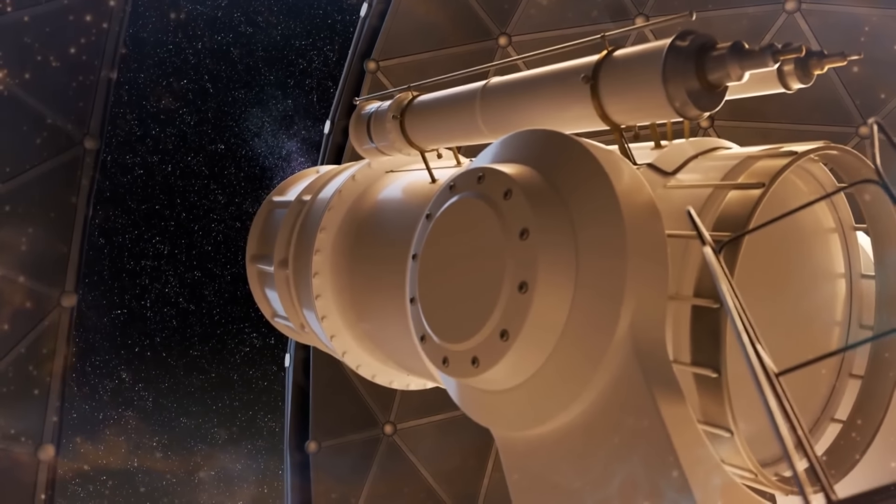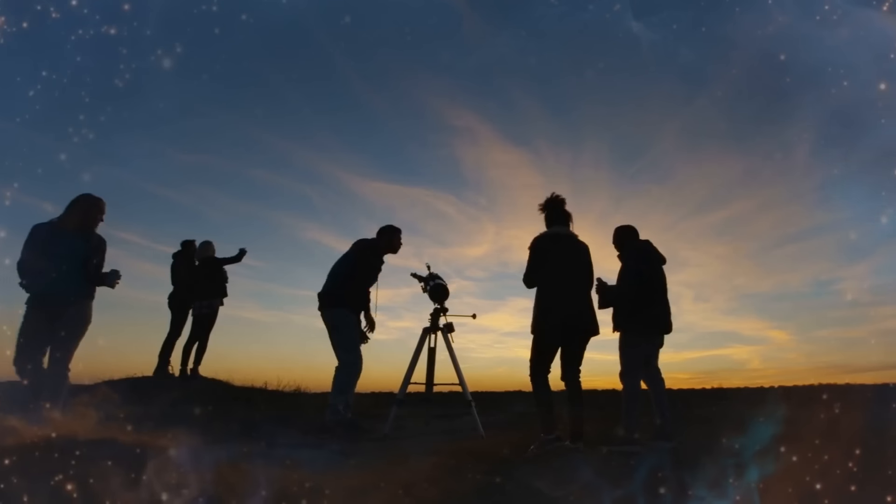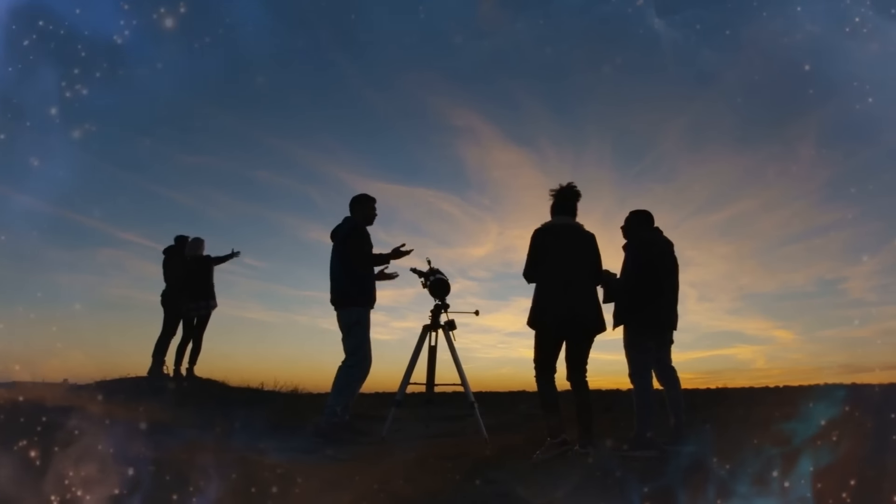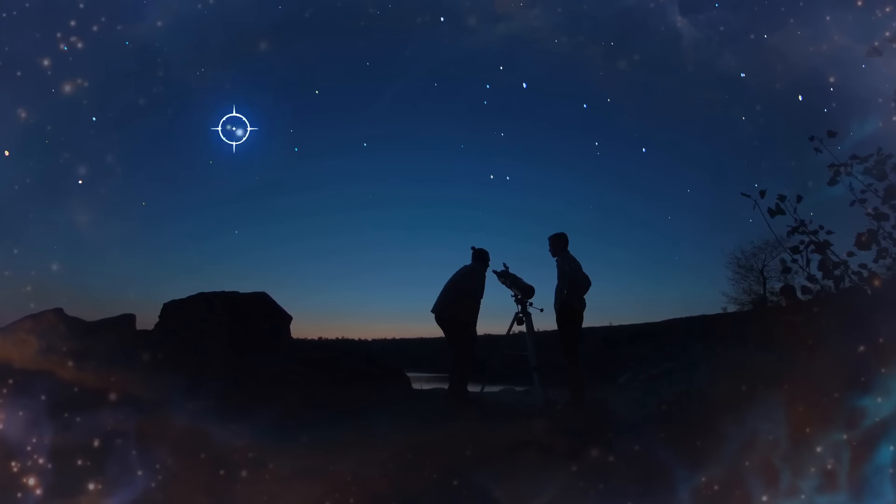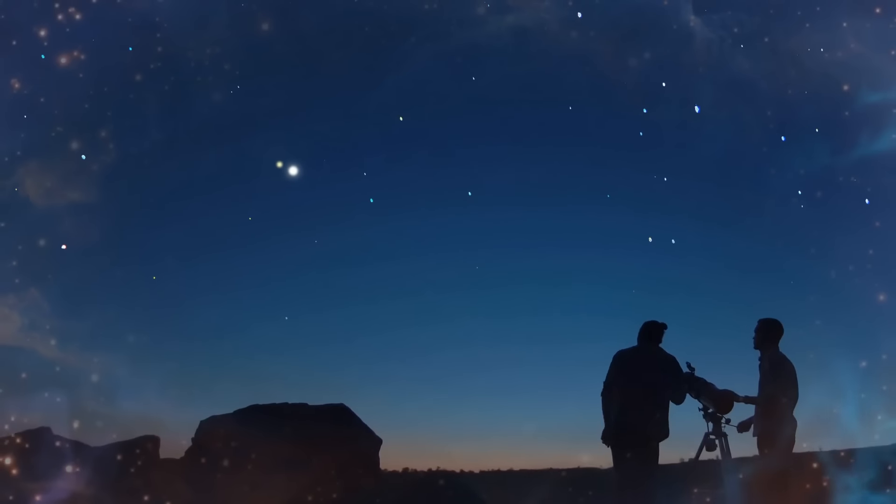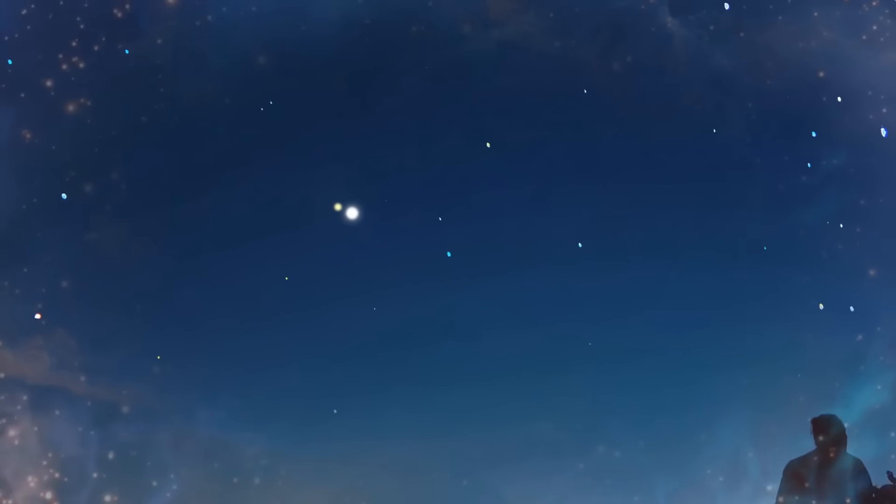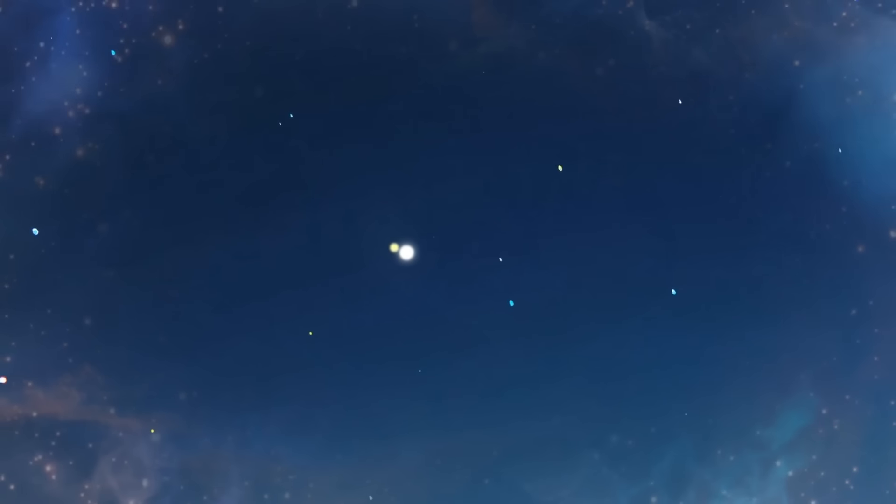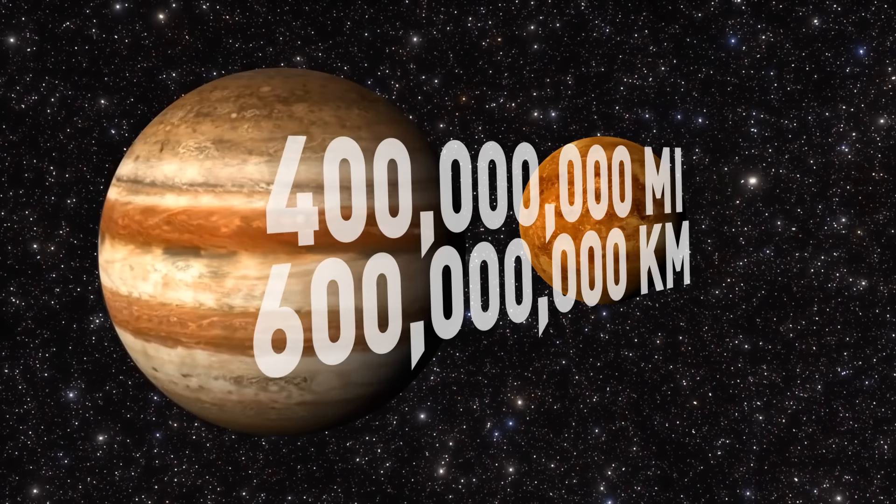There's something spectacular stargazers across the globe could see recently. Jupiter and Venus, the two brightest planets in the sky, ended up so close it appeared like they were about to collide. Or as if they were kissing too. At least that's what it looked like from here on Earth. In real terms, they're still 400 million miles away from each other.